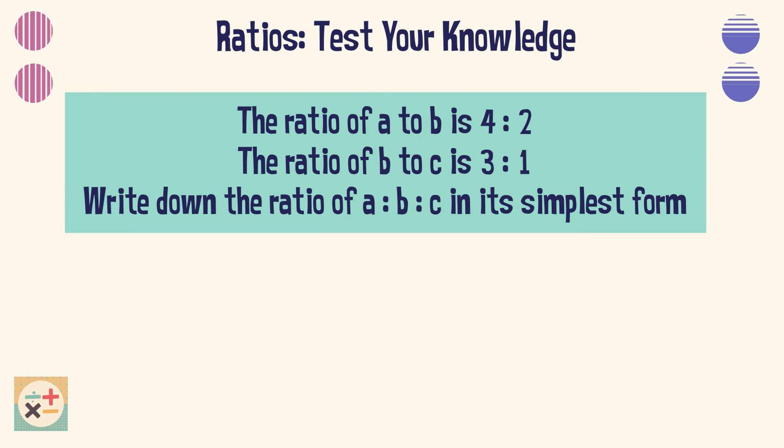Question 8. The ratio of A to B is 4 to 2. The ratio of B to C is 3 to 1. Write down the ratio of A to B to C in its simplest form.